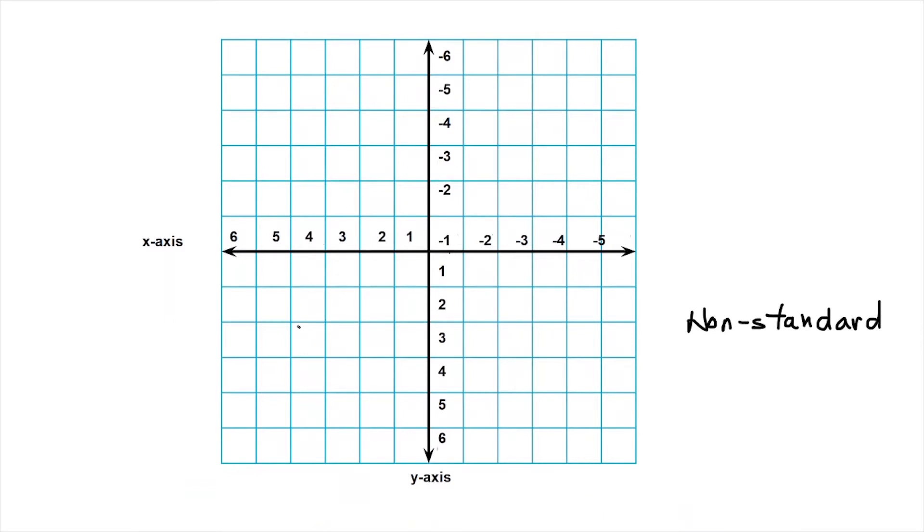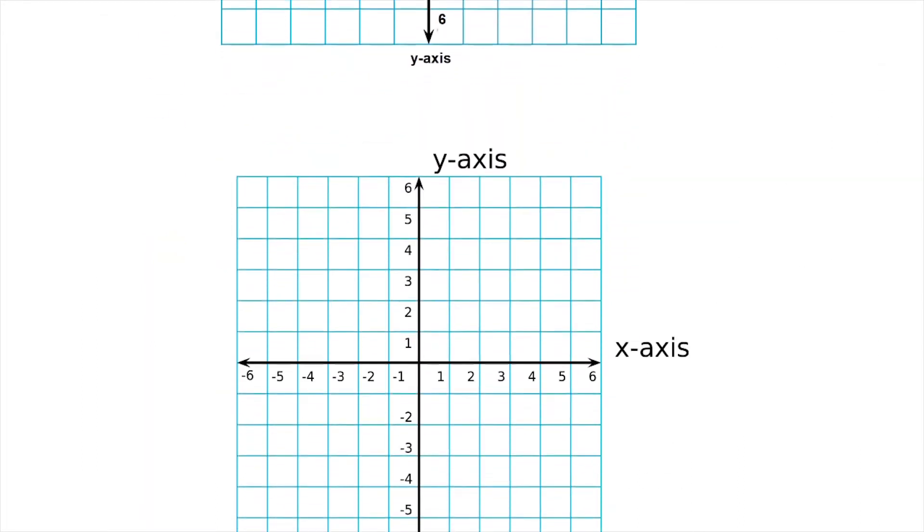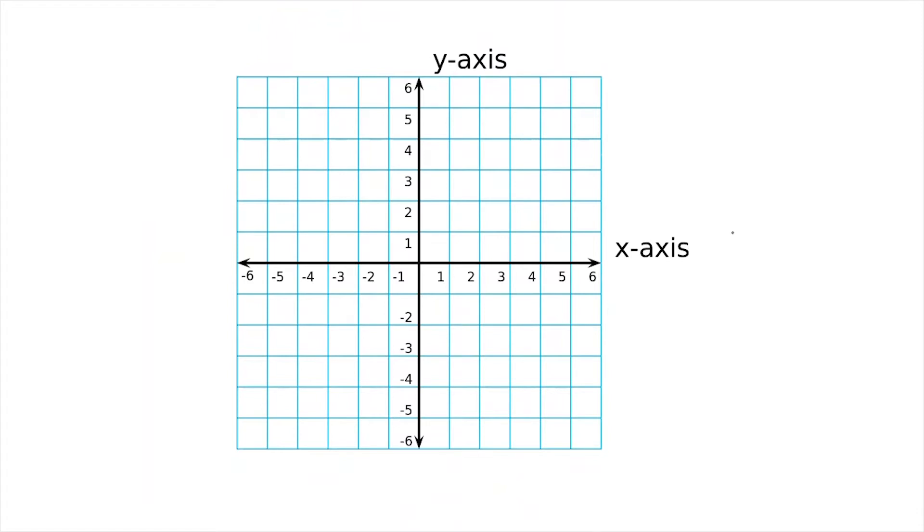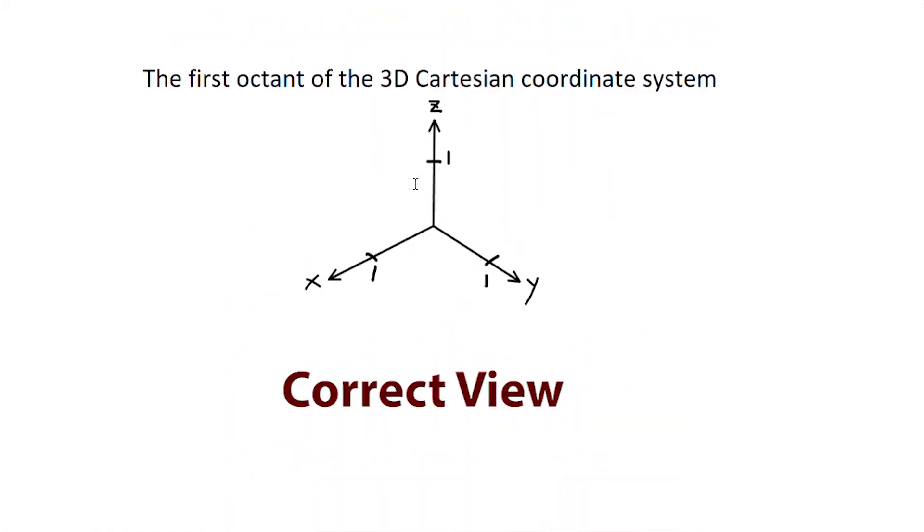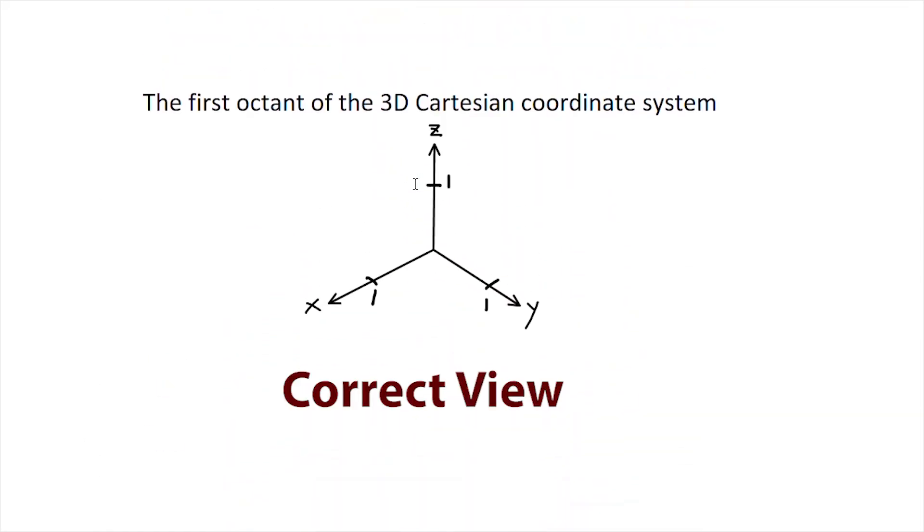Q1 is down here where we would normally have Q3. You don't draw graphs in this fashion in 2D. So therefore, obviously, you'd want to draw 2D graphs showing Q1 here, Q2 here, etc. So in that same fashion, this is our standard view of the 3D Cartesian coordinate system.